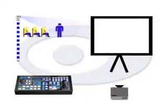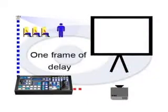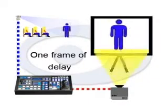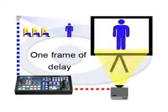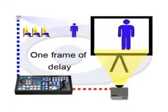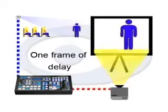ProductionView HD adds only one frame of delay from input to output, making it an ideal solution for image magnification used during live events.